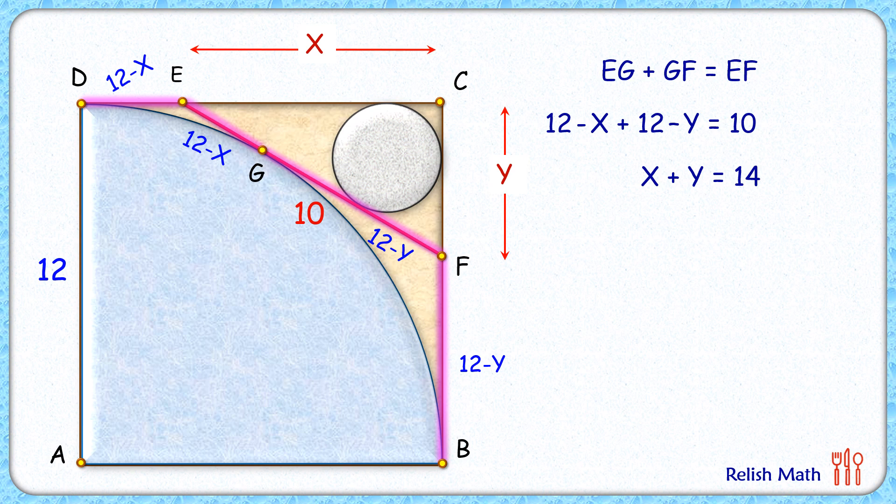Now here we have compared the tangent length with respect to the blue quadrant. Now let's do the same exercise with this gray circle.